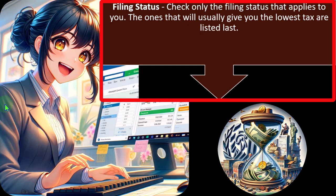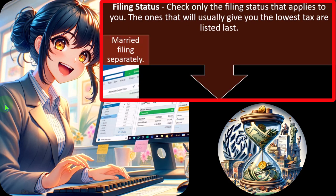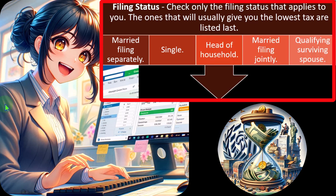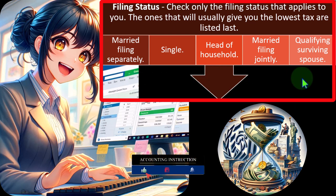The major filing statuses include married filing separately, single, head of household, married filing jointly, and qualifying surviving spouse — listed roughly in order from least favorable to most favorable from a tax standpoint. Obviously it's not personally favorable to be a qualifying surviving spouse, but for taxes it could result in the biggest tax benefit.